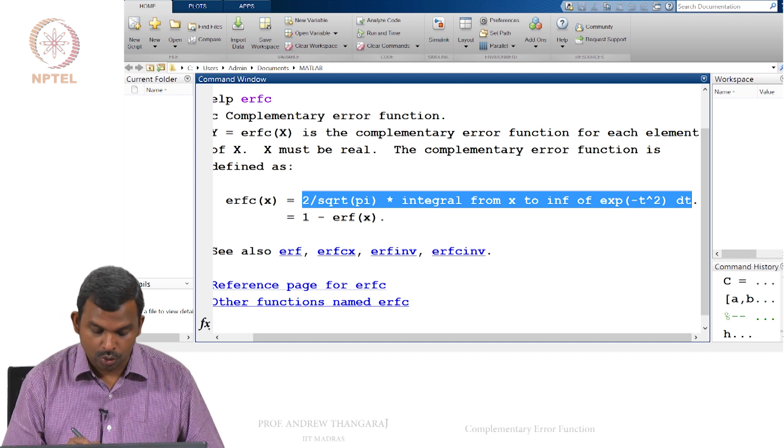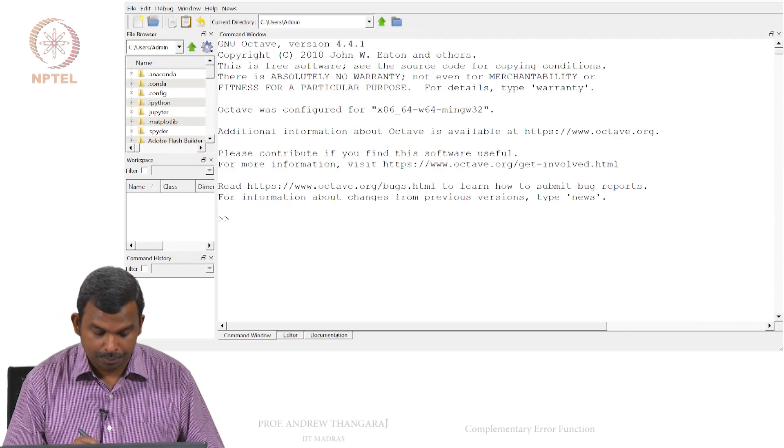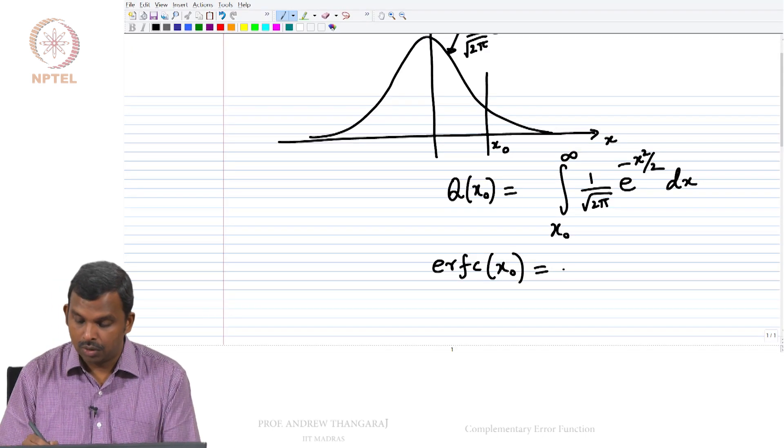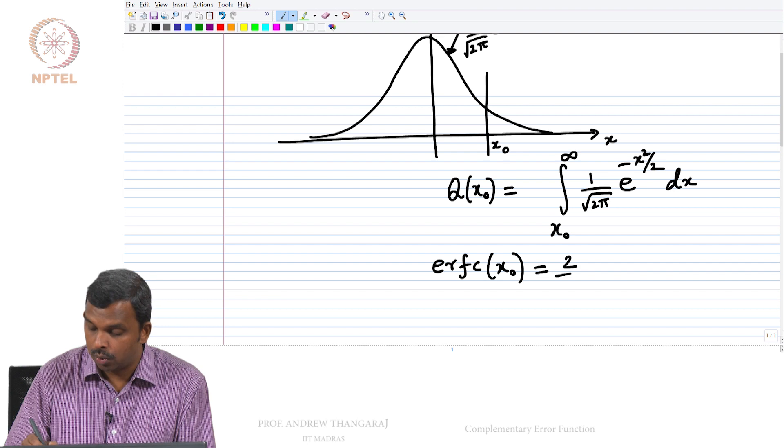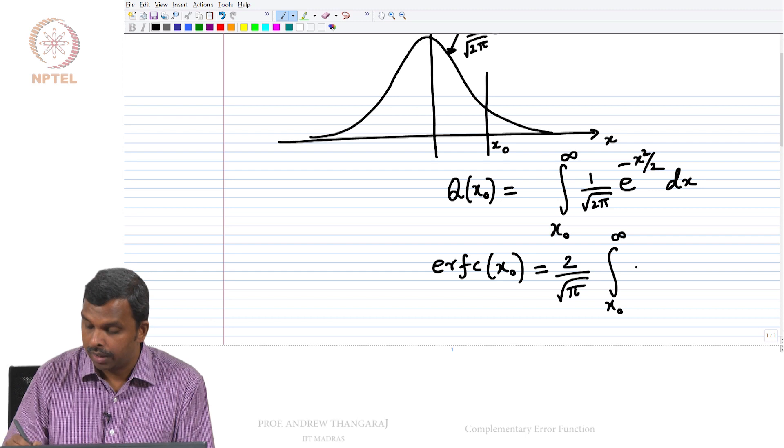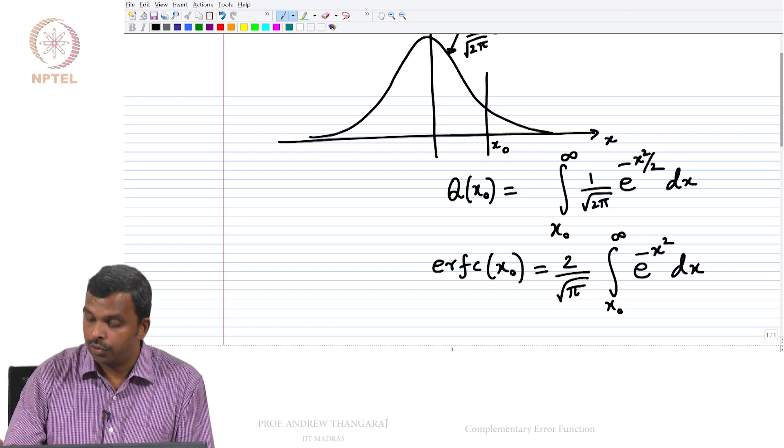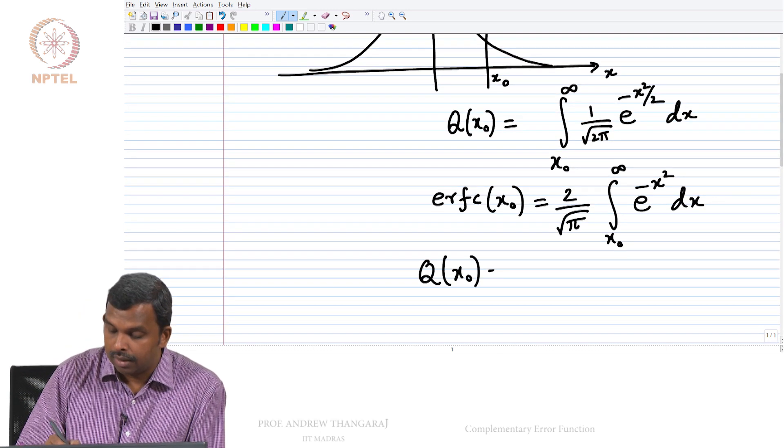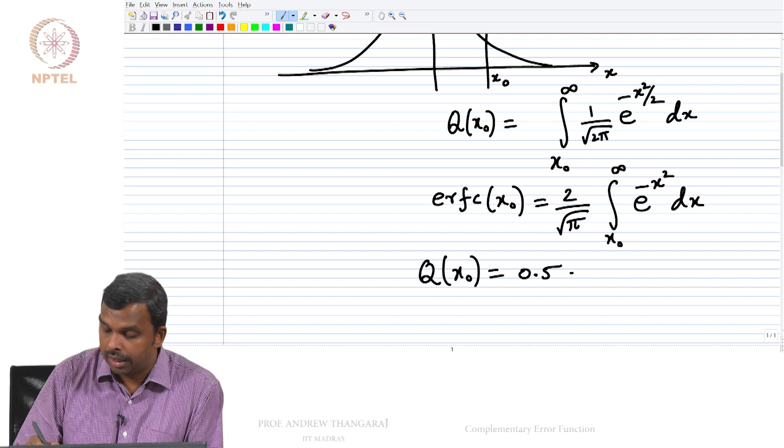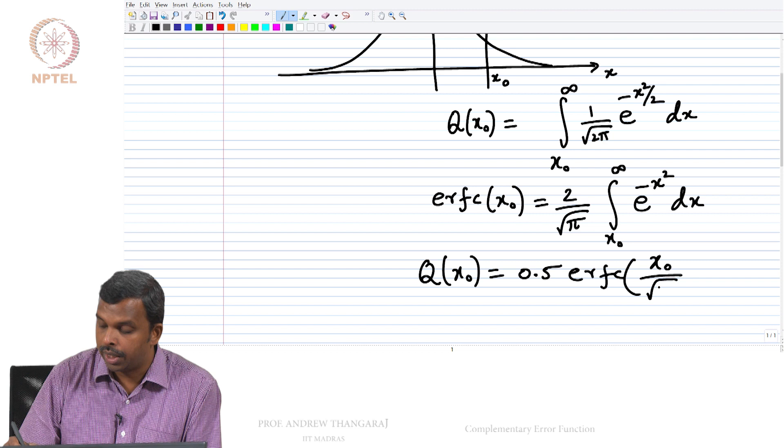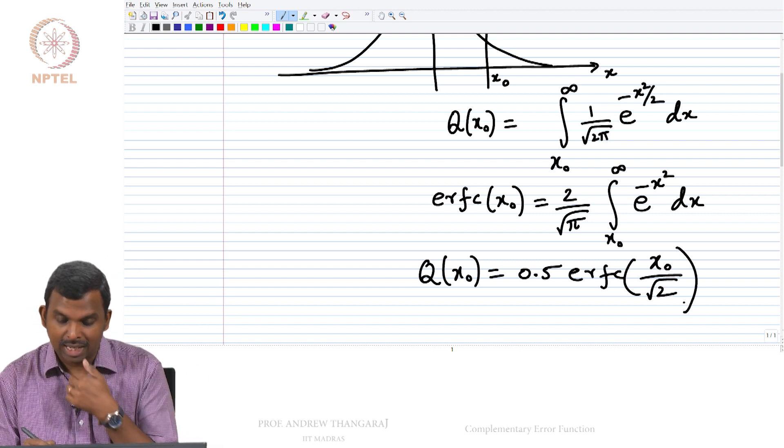So this function is 2 by square root of π integral x0 to infinity e^(-x²) dx. So if you stare at these two very closely, it turns out Q of x0 is 0.5 times ERFC of x0 by square root of 2. So you can check that.